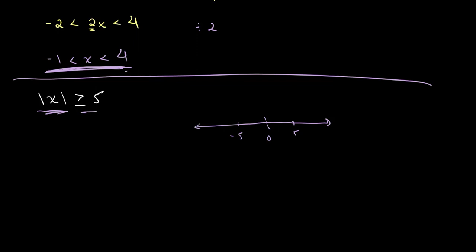The magnitude of x is greater than or equal to 5. On the right side, the value will be greater than or equal to 5. On the left side, since the magnitude is greater than 5, we get values less than negative 5. So for the absolute value of x to be greater than or equal to 5, x must be less than or equal to negative 5 or greater than or equal to 5.